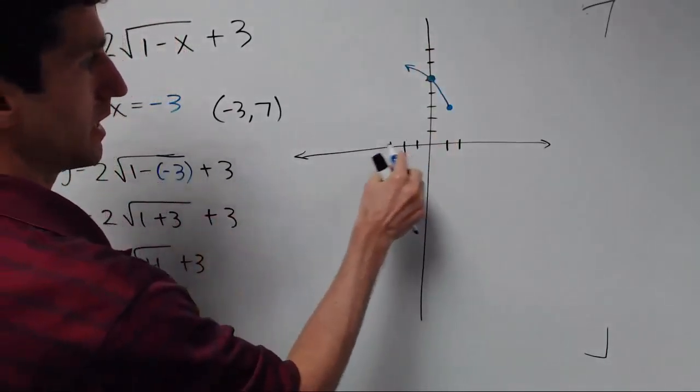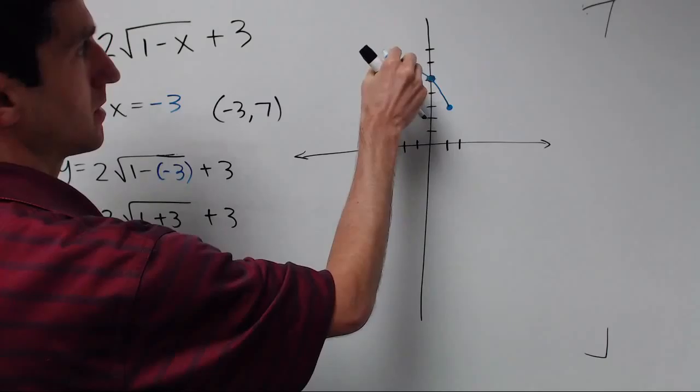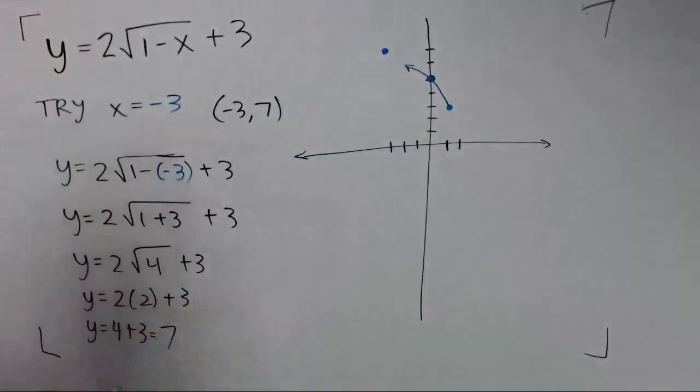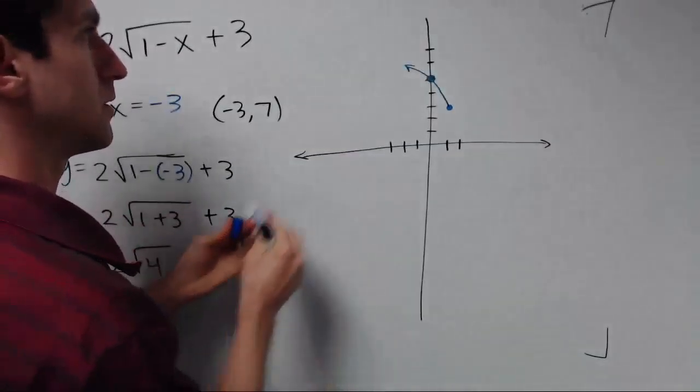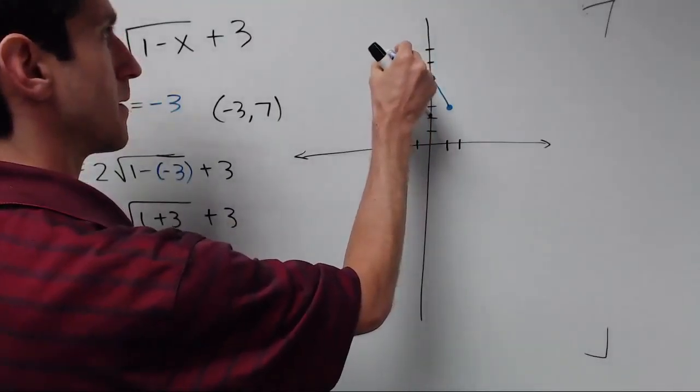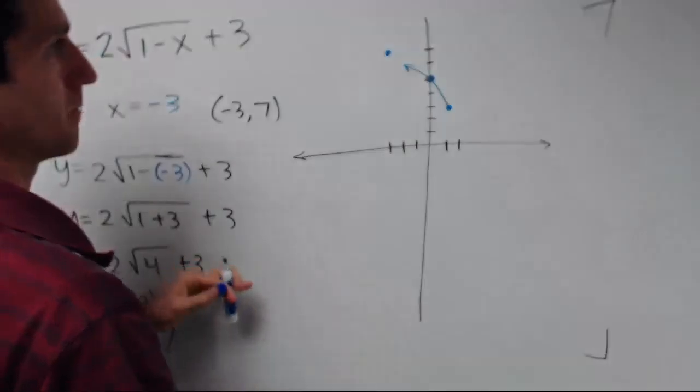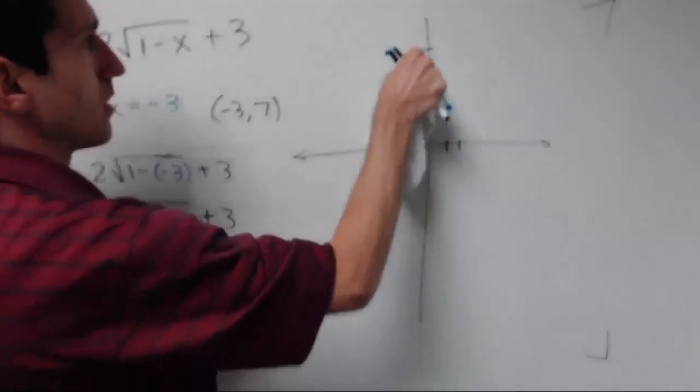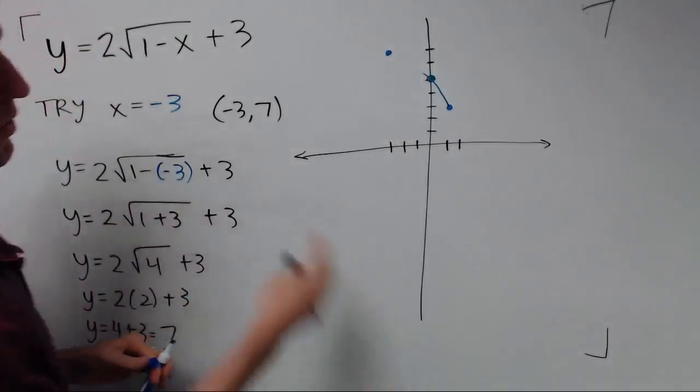So going to negative 3 and then up to 7, right there. That's a little too high. The final step is to connect these with a smooth curve.